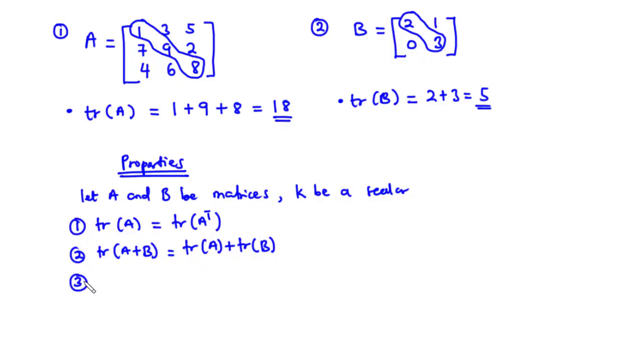Property 3: The trace of KA is equal to K times the trace of matrix A.